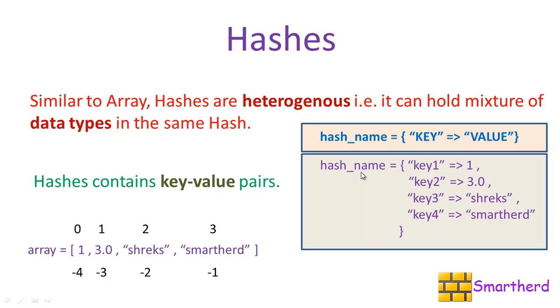Whenever we write hash_name subscript key1, this implies the value 1. So instead of having the default index or keys as that of arrays, we can define our own index like this: key1, key2, key3, and key4. You can write first, second, third, fourth also as keys.